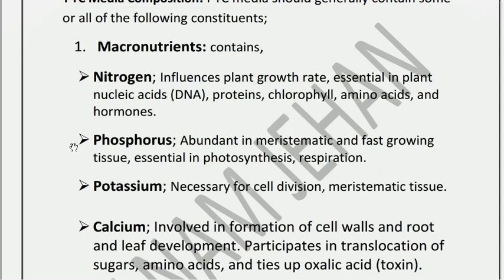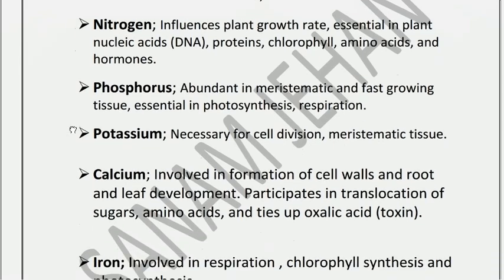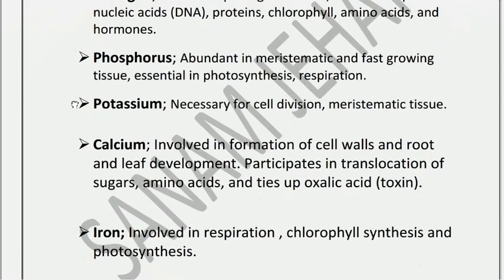Phosphorus is required in large amounts for fast-growing tissue. It is essential in photosynthesis and respiration. Potassium is involved in cell division of the plant, and potassium is necessary for tissue formation.